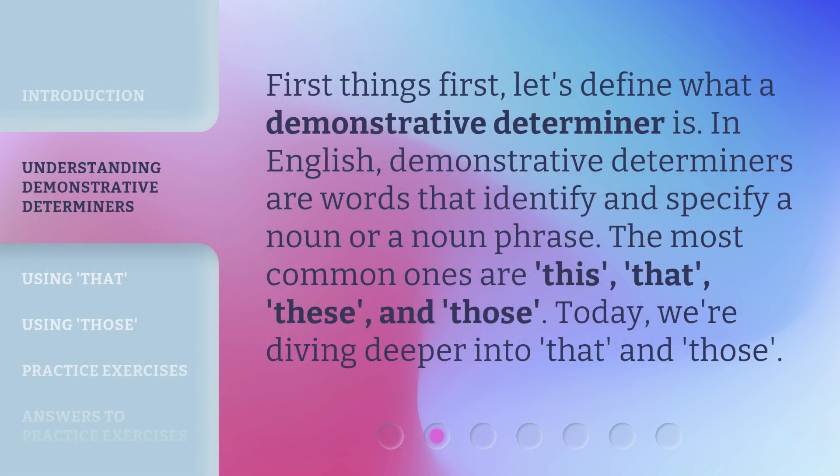First things first, let's define what a demonstrative determiner is. In English, demonstrative determiners are words that identify and specify a noun or a noun phrase. The most common ones are 'this', 'that', 'these', and 'those'.